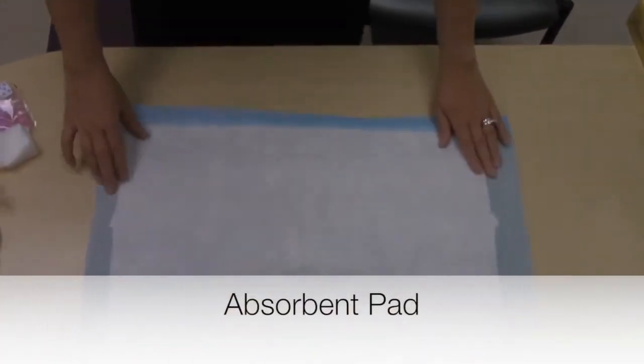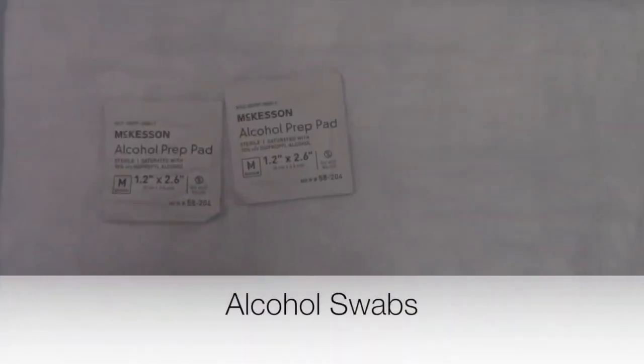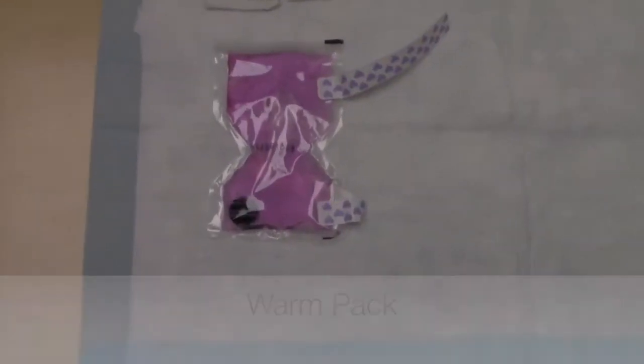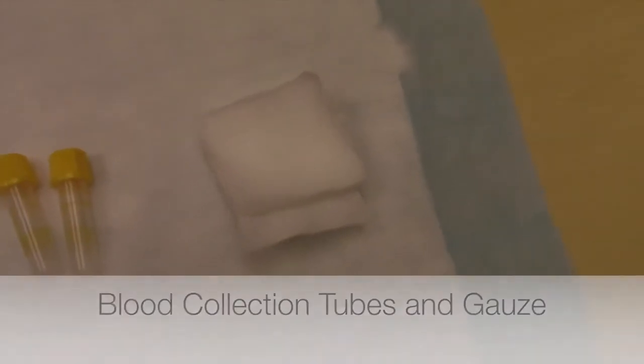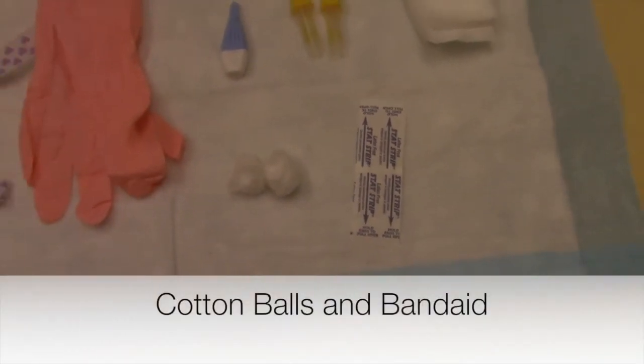You should have an absorbent pad, alcohol swabs, warm pack, gloves, lancet, blood collection tubes, gauze, cotton balls, and a band-aid.